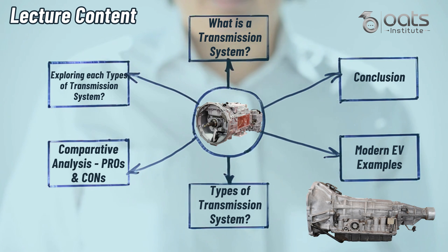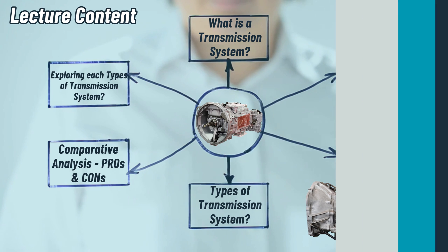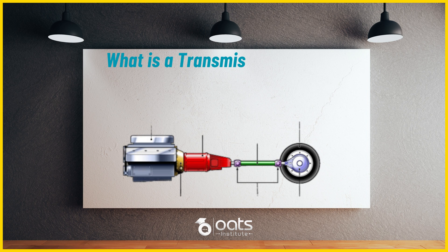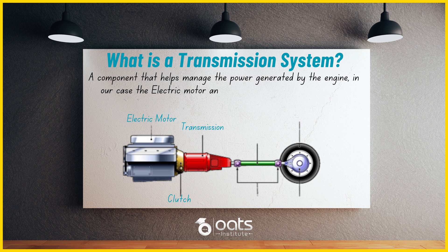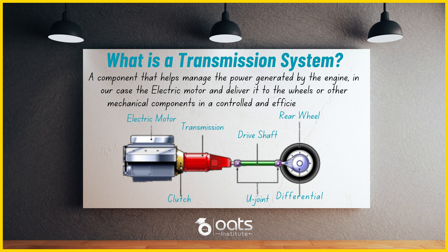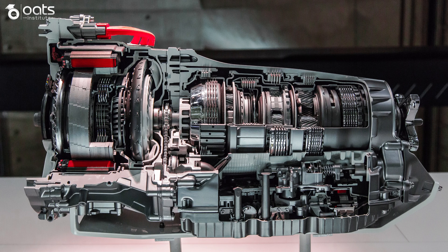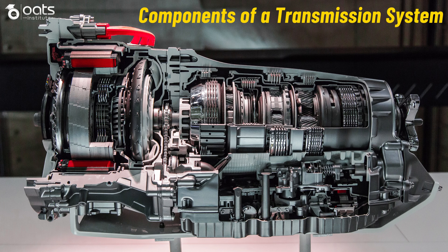Let's start with our first topic: what is a transmission system? A transmission system in the context of automotive engineering is a critical component that helps manage the power generated by the engine — in our case, the electric motor — and delivers it to the wheels in a controlled and efficient manner. It acts as the intermediary between the electric motor's power and the vehicle's movement. The transmission system relies on five key components that work together seamlessly to ensure efficient power transmission.